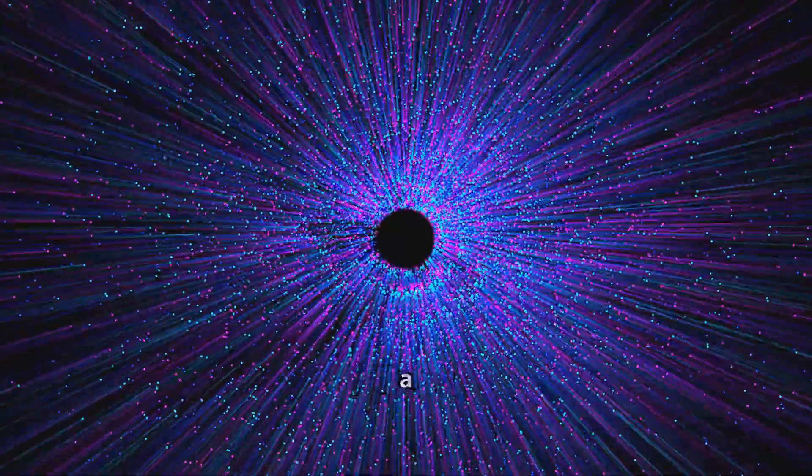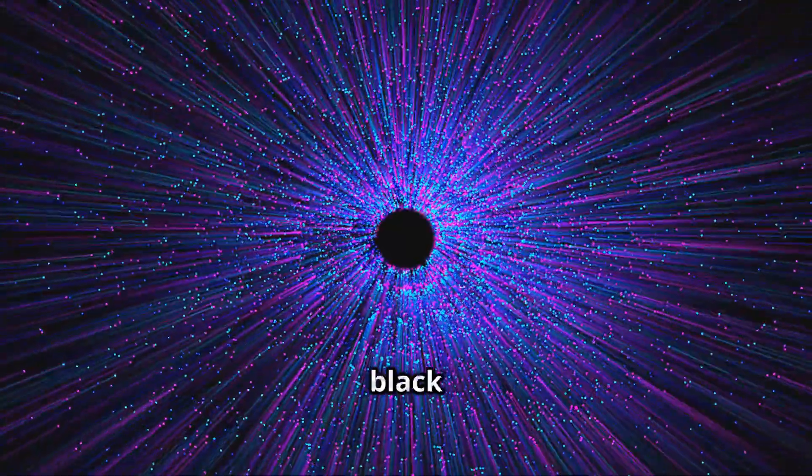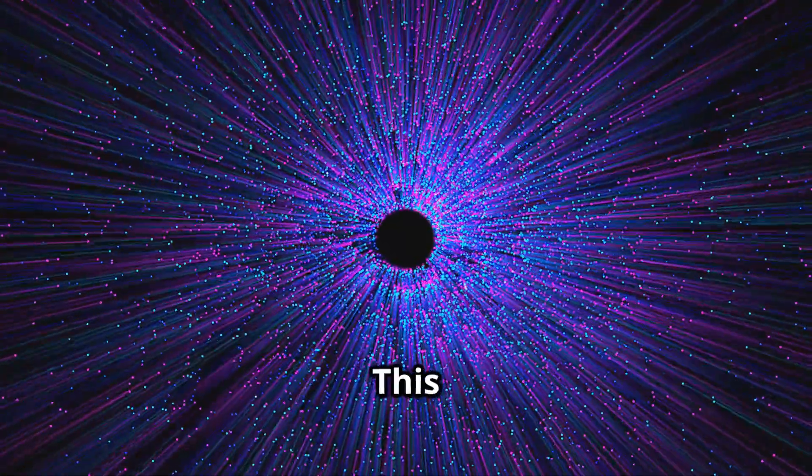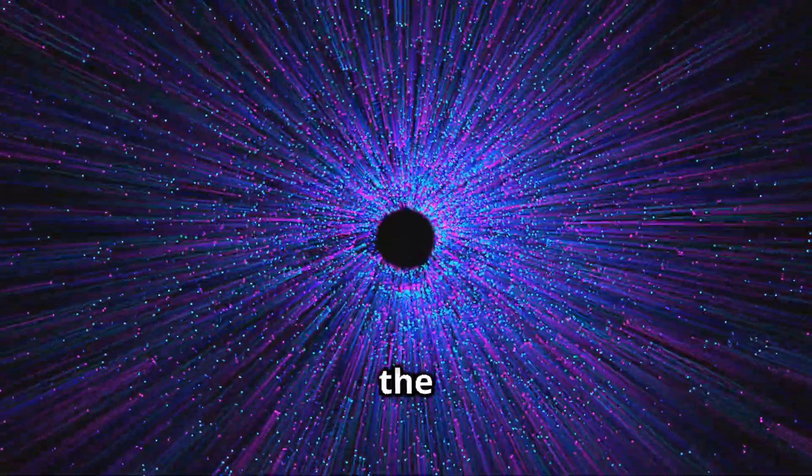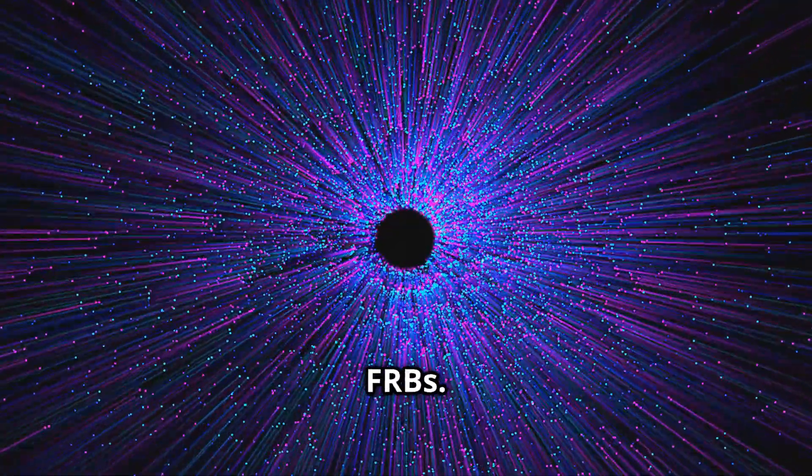Others suggest a blitzar, a neutron star that collapses into a black hole, could be the culprit. This process would release a tremendous amount of energy in a very short time, potentially explaining the brief but intense nature of FRBs.